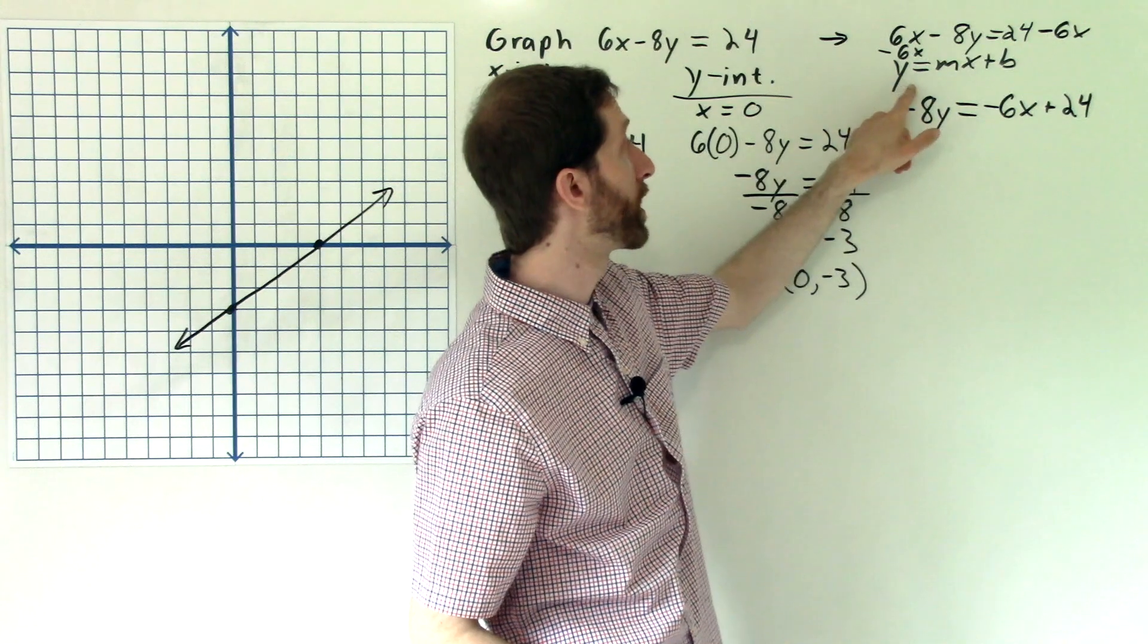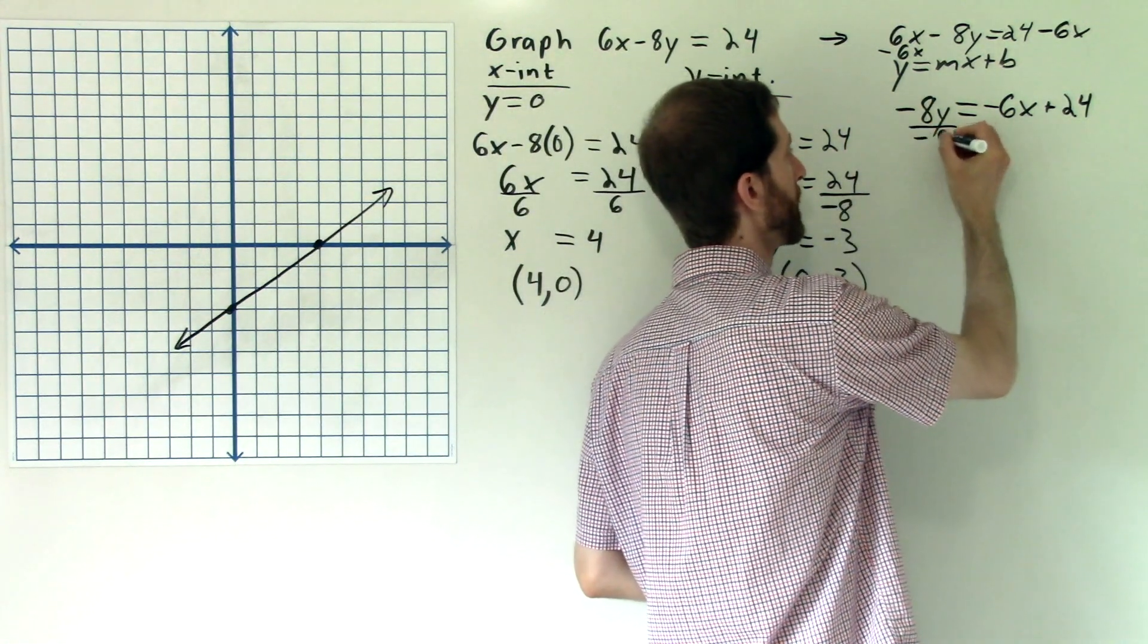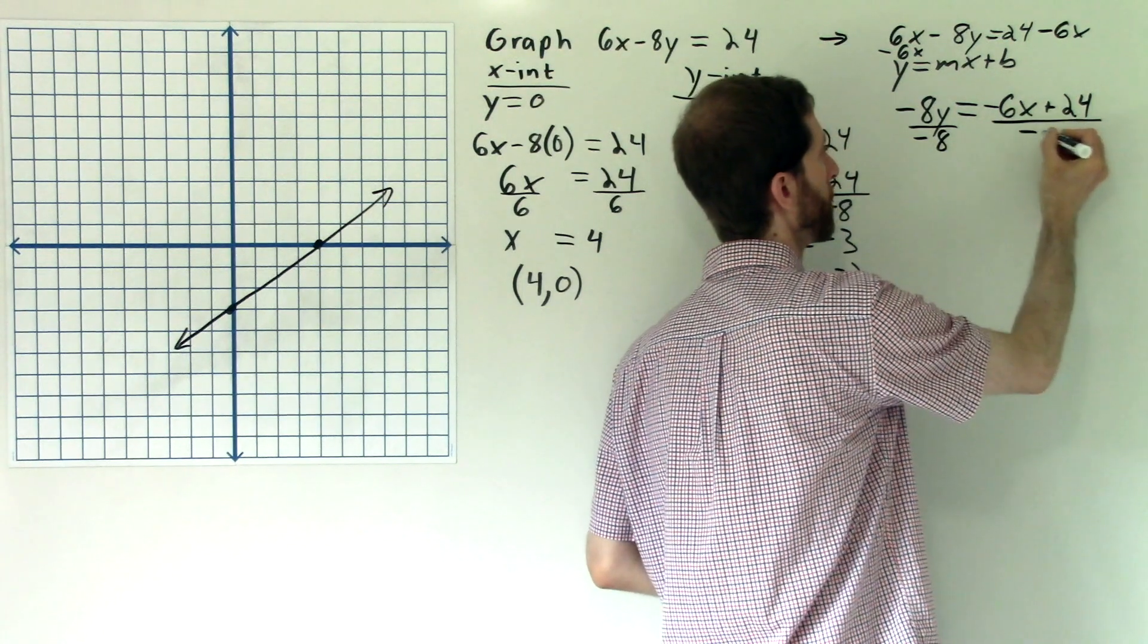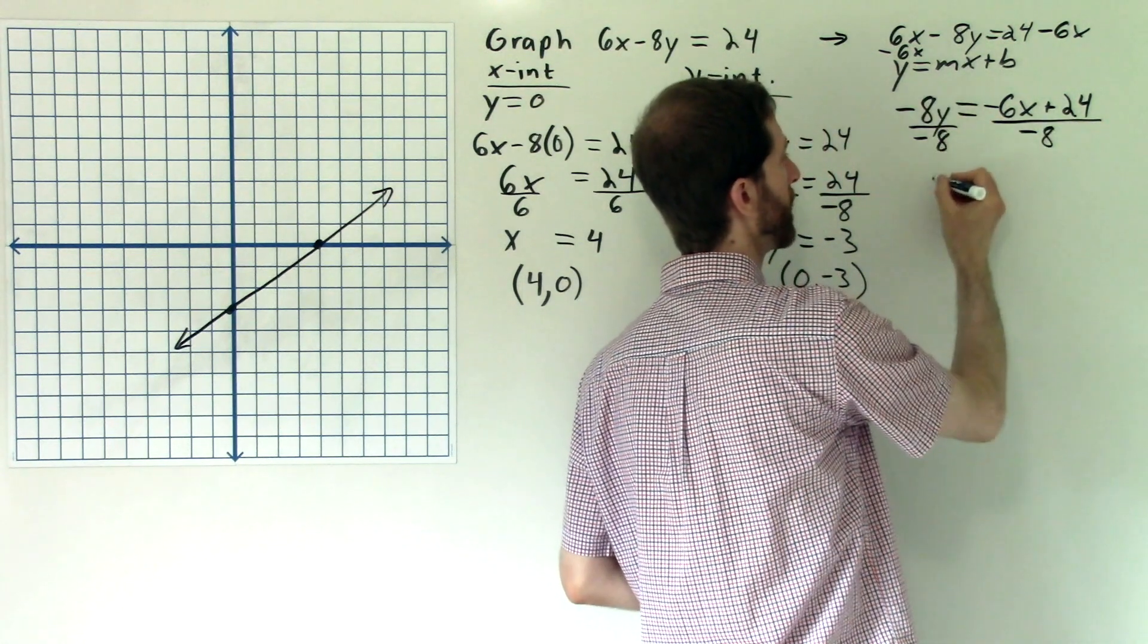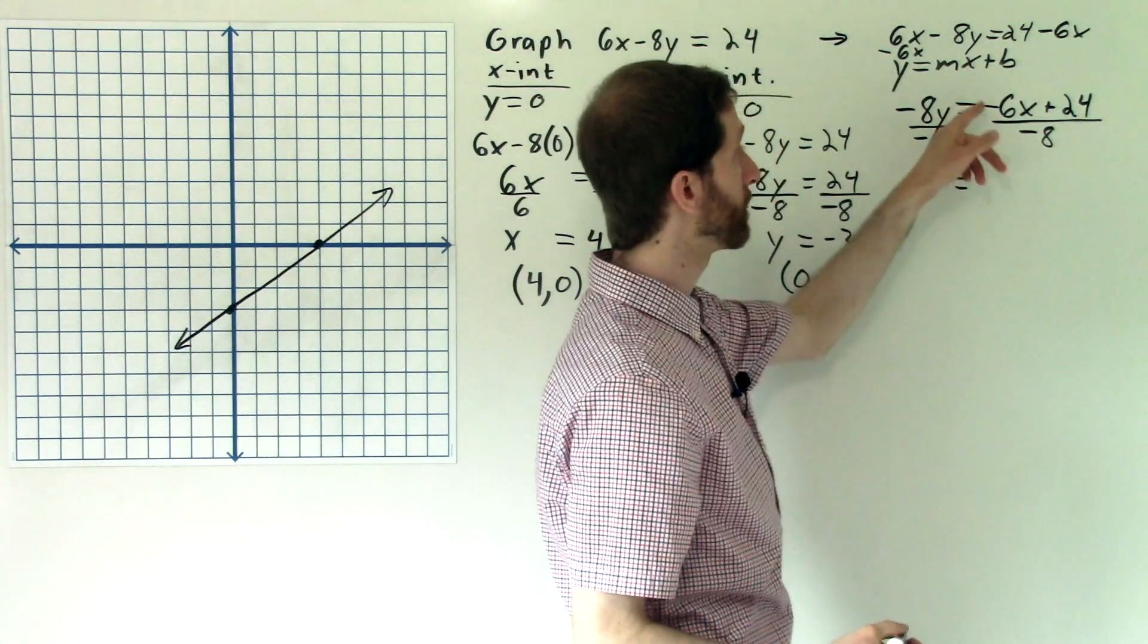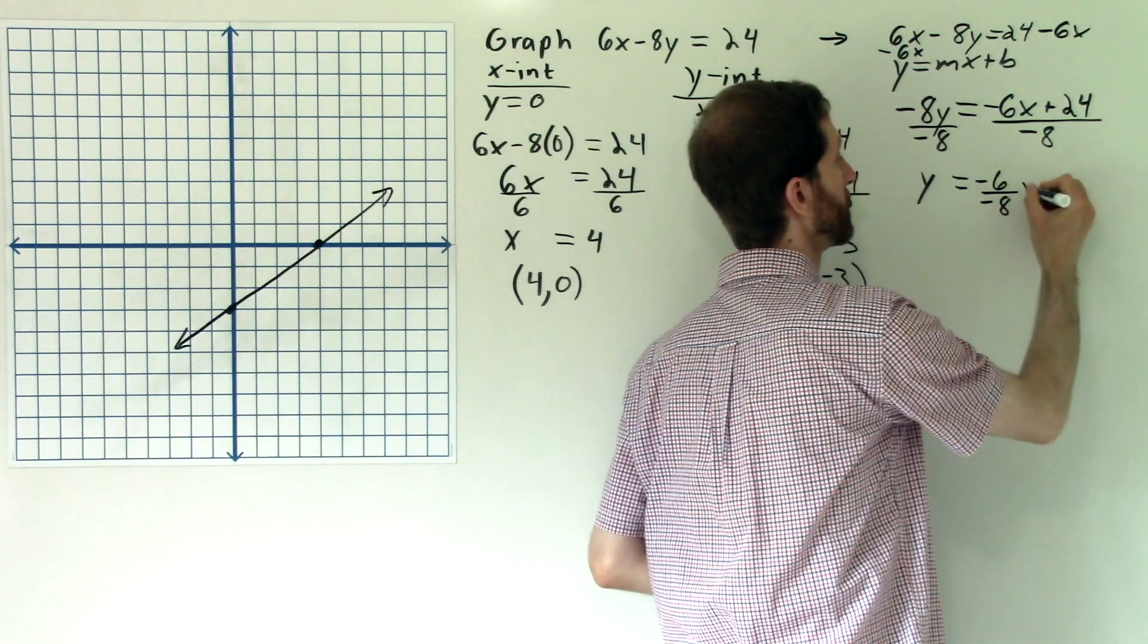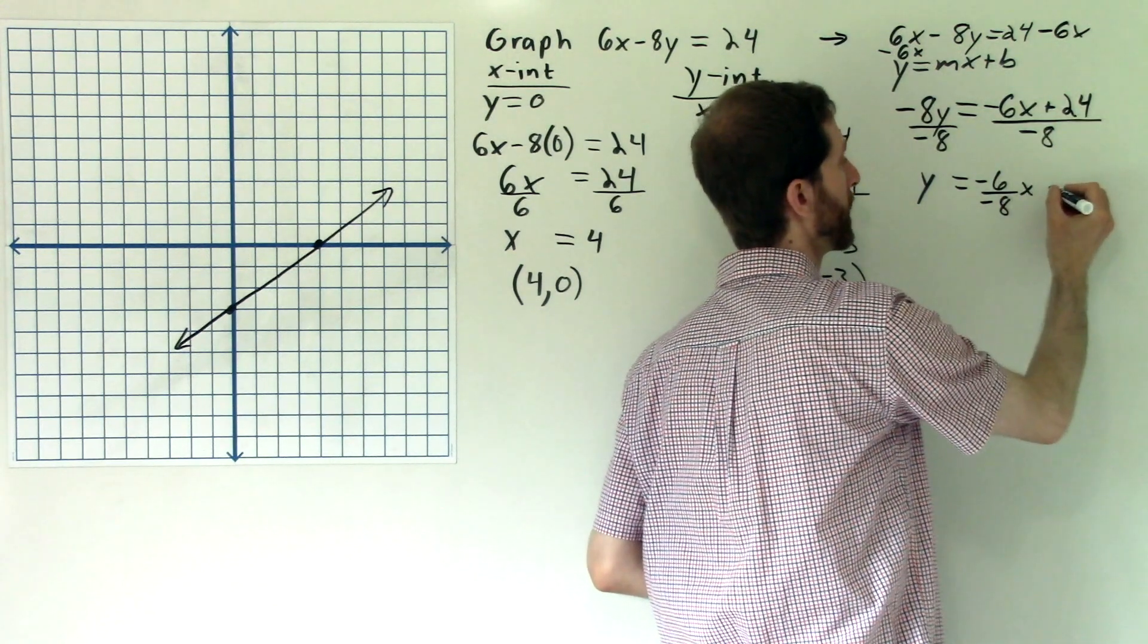Now we're almost there. We want to get y alone. So I divide both sides by negative 8. Everything gets divided by negative 8. And so the negative 8s divide out to equal 1. And I can divide each term now by negative 8. Negative 6 divided by negative 8 is what I have here. That's x. 24 divided by negative 8.